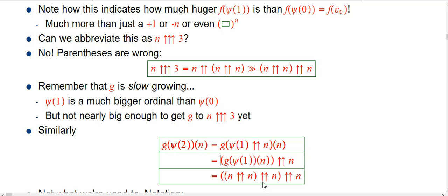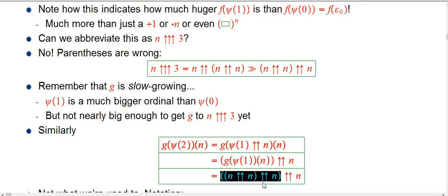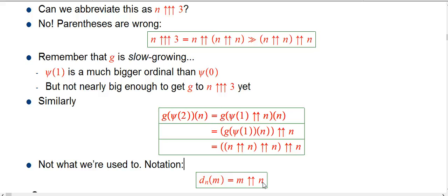What about g of psi of 2? Psi of 2, by our definition, is an ordinal whose fundamental sequence is created by taking psi of 1 and raising it to powers — in other words, doing a double-up n. We can use the same rule. So g of psi of 2 at n is just g of psi of 1 of n, double-up n. But we know g of psi of 1, so that's that expression, and then double-up that — but again with the parentheses in the wrong place if we really wanted to get the biggest number possible out of four n's and three double-up symbols. So this isn't what we're used to; we don't have a pre-existing compact notation for this the way we did for triple-up.